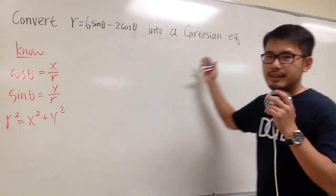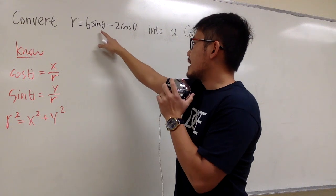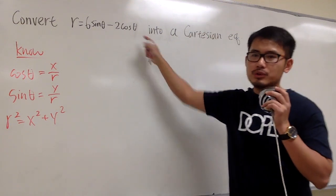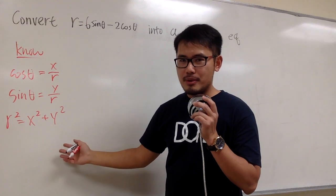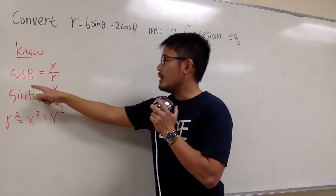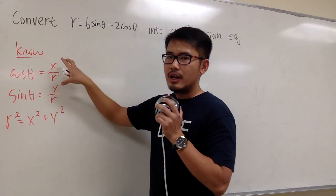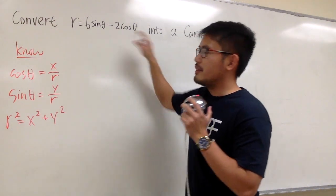Let's convert this polar equation into a Cartesian equation. Here we have r equals 6 sine theta minus 2 cosine theta. These are the things that we have to know and remember, and these are the things that we have to use. As you can see, we have sine theta, cosine theta right here, and we can plug in these two things into here and here.